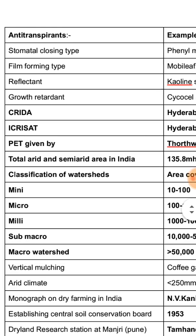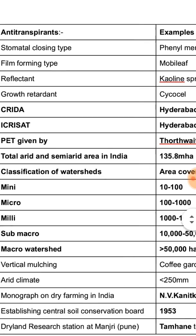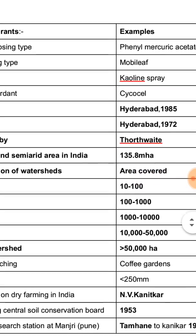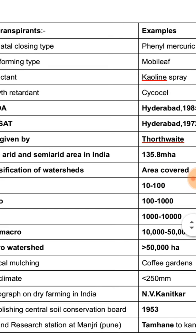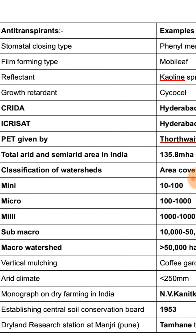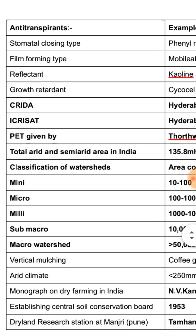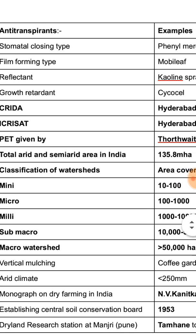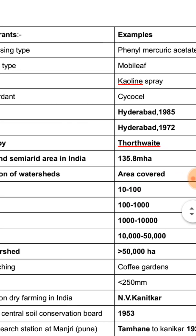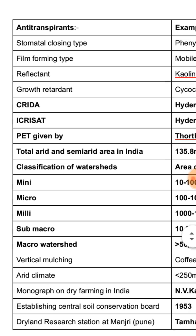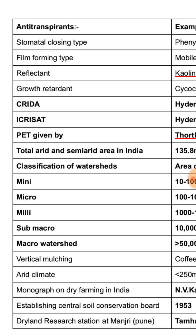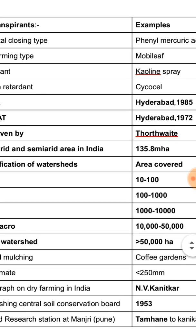Growth retardant: CCC (Cycocel). CREDA — Central Research Institute for Dryland Agriculture — is located at Hyderabad, established in 1985. Another important institute for dryland agriculture is located at Hyderabad, established in 1972. PET, or Potentially Evapotranspiration, was given by Thornthwaite.